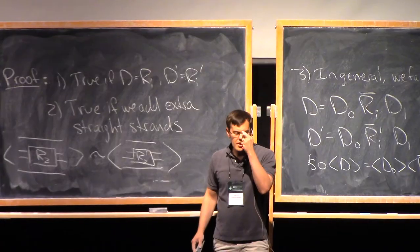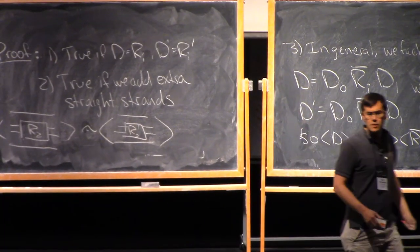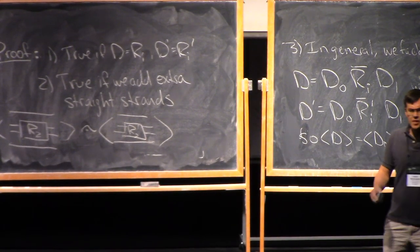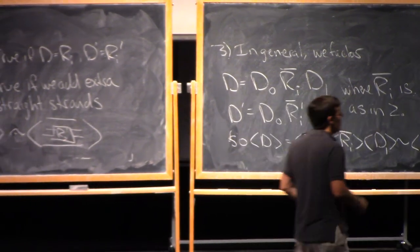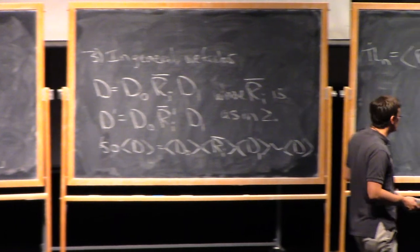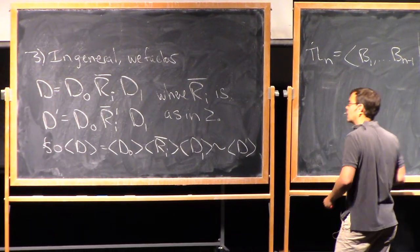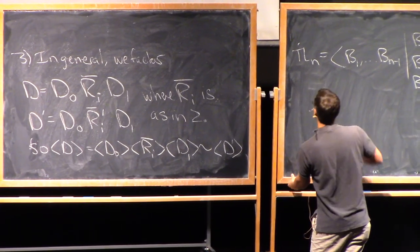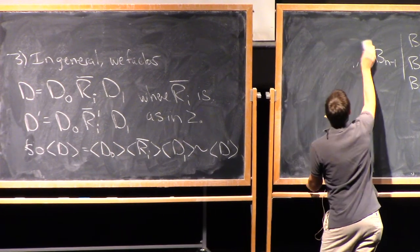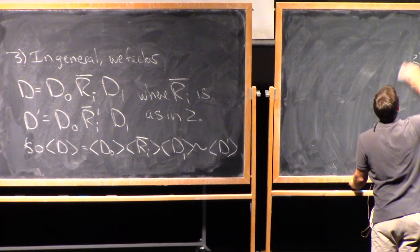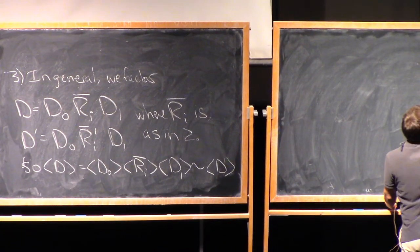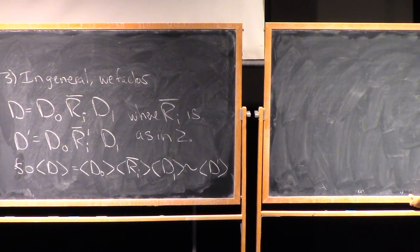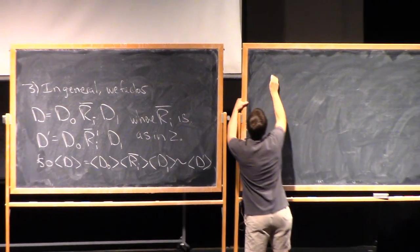So this is a sort of uncategorified story for tangles. Now we'd like to categorify it and see what happens if we try to build a Khovanov homology. So let's categorify — maybe let me again tell you the slogan and then we'll work through what all the pieces mean.